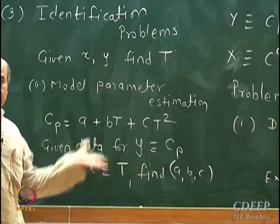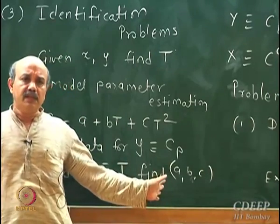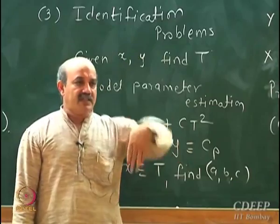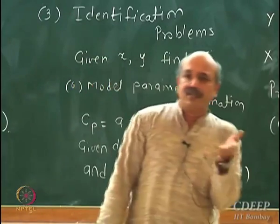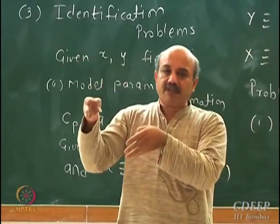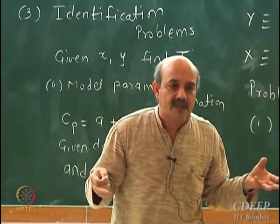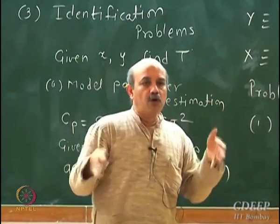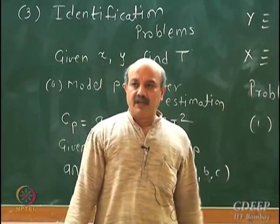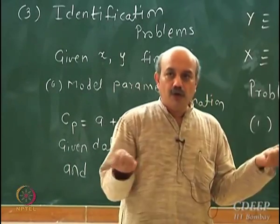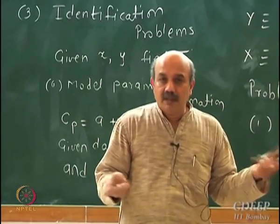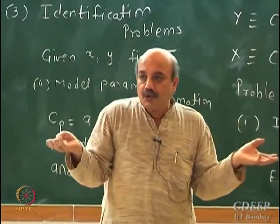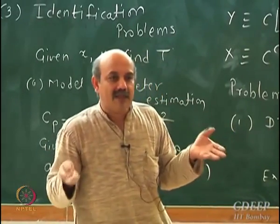Given data, this is a parameter estimation problem. Other parameter estimation problems in chemical engineering include rate expressions: you have measured the rate of change of concentration of a particular species and you have a proposed expression but do not know the parameters. You have rate values, concentration values, and you want to find out the parameters of the rate expression. Or you are fitting a thermodynamic PVT correlation — you have data for P, V, and temperature, a proposed model, and you estimate the parameters from data.